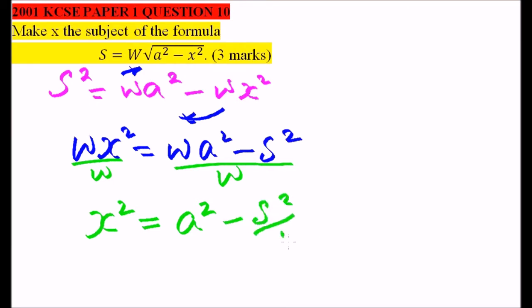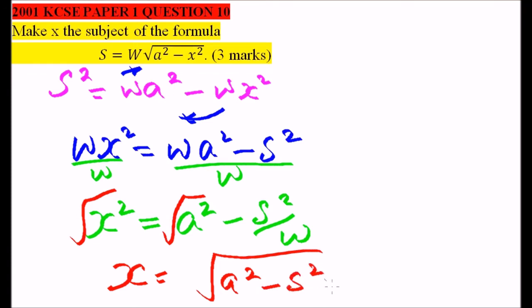Now we get the square root of both sides so we have our x equals the square root of a squared minus s squared divided by w. The whole of this expression is under the square root sign. So that is how you work out that question and you get yourself three marks.